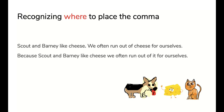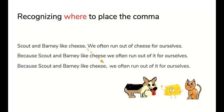So now that we're going to turn one of them into a dependent clause, because Scout and Barney like cheese, we often run out of it ourselves. We've got a dependent clause joined together with an independent clause, and we need a comma in there. So where's it going to go? Right there. Right after you replace that period, and then you see going down the yellow arrow, that's where your comma goes. So just replace the period with a comma if you're making a complex sentence out of two sentences.